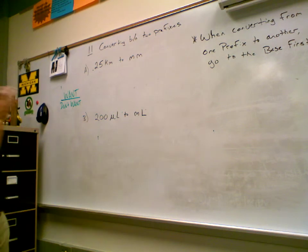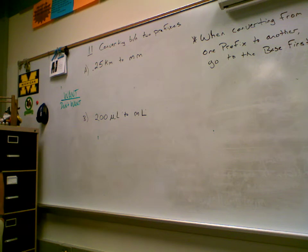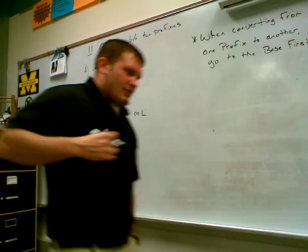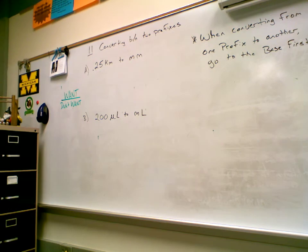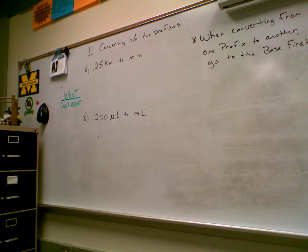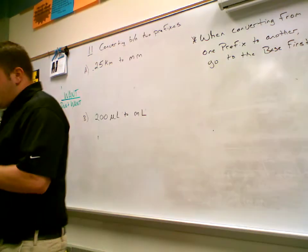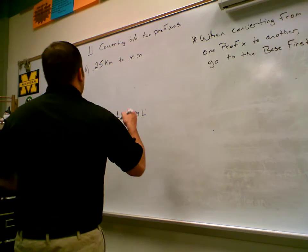I just have a good idea to have a whiteboard that does spell check — you could have handwriting recognition spell check, but you guys probably won't be able to see my notes; there'd be so many red lines everywhere. Anyway, when converting from one prefix to another, go to the base first. Some of you may not need to, but I have to — that's just how I make it work and know I'm not wrong. So here I'm going from 0.25 kilometers into millimeters.